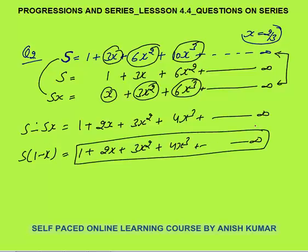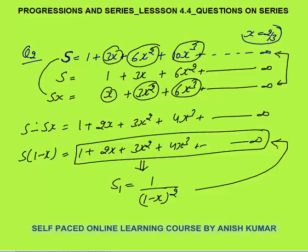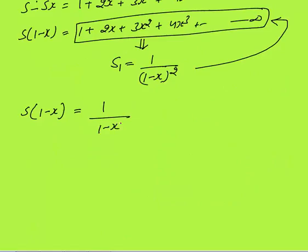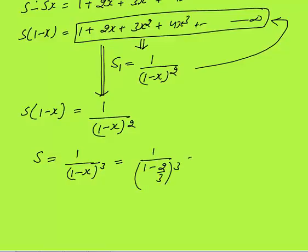This resulting series 1 + 2x + 3x² + 4x³... is exactly the first question, whose answer was 1/(1 - x)². So S(1 - x) = 1/(1 - x)², meaning S = 1/(1 - x)³. Substituting x = 2/3: S = 1/(1 - 2/3)³ = 1/(1/3)³ = 1/(1/27) = 27. The answer is 27.